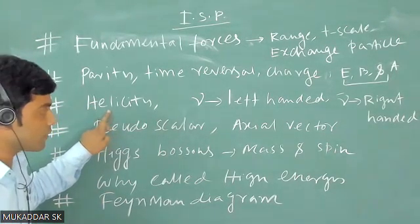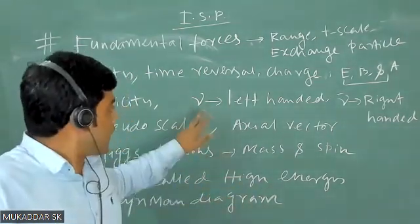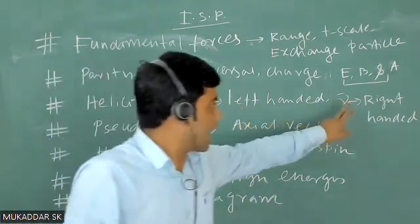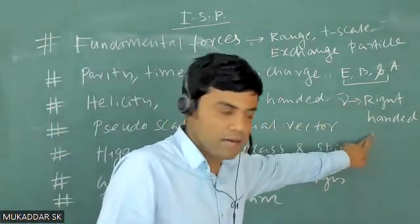They may ask, and they will ask you that neutrino shows left-handed helicity and antineutrino shows right-handed helicity.